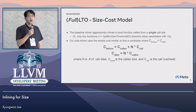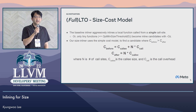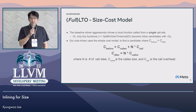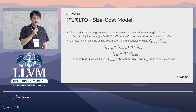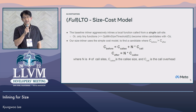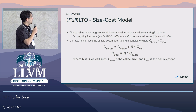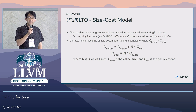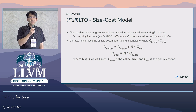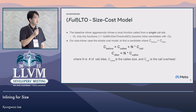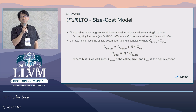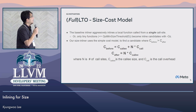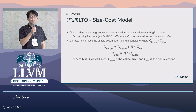Let me recap how the baseline inliner works in LTO. Under minimum size optimization, inlining is pretty much prohibited except the single call site case. So the existing LLVM inliner uses a negative inline cost to aggressively inline single call site cases. Otherwise, only tiny functions where the IR size is less than five become inline candidates.